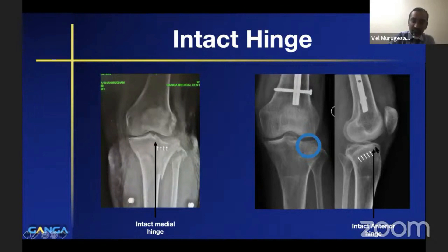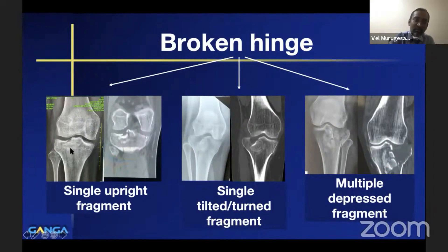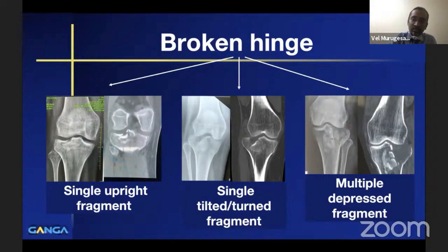The second type is a broken hinge, where there is no continuation of trabeculae between the depressed fragment and the rest of the bone. This can be subclassified as an upright fragment, where the articular surface of the depressed fragment is parallel to the rest of the tibial articular surface, or a tilted or turned fragment, where the articular surface is not parallel.